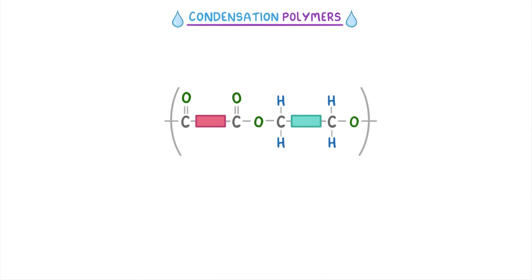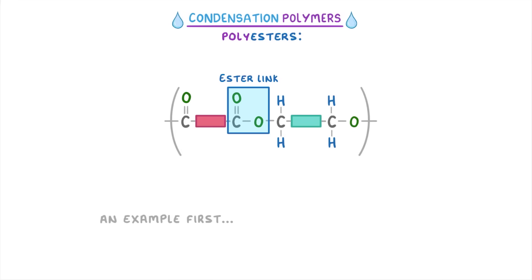In today's video we're looking at condensation polymers, and in particular at a type called polyesters which are made using ester links. To make things easier, we're going to run through an example first to give you an idea of how it works, and then we'll explain exactly what's going on afterwards.